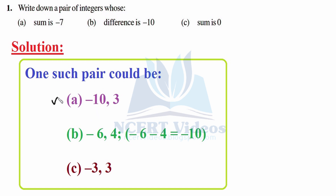Part b: Difference is minus 10. Two numbers can be taken as minus 6 and 4. We subtract; since the signs are the same we add them and the sign comes from the negative number, giving minus 10.